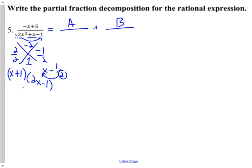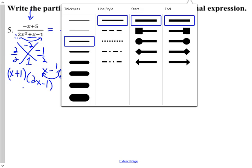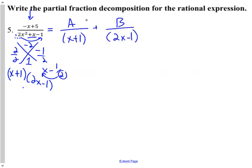So we're going to have A, some number over x plus 1, and B, another number over 2x minus 1. These two fractions add to equal negative x plus 5 over 2x squared plus x minus 1. To solve for A and B, we go through the process of adding them — we need a common denominator, so we multiply both sides of the whole equation by the least common denominator, which is x plus 1 times 2x minus 1.